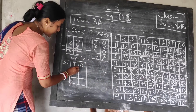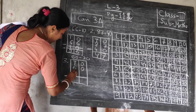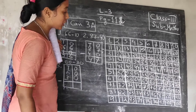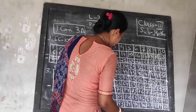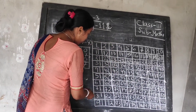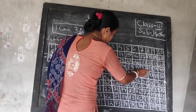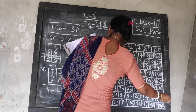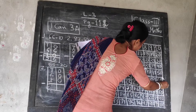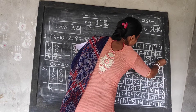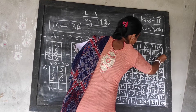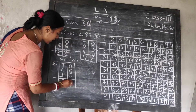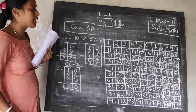Then, 60 minus 30 — write here: 60 minus 30. 30 means you have to move 3 boxes up. Where is your 60? 60 is here. So, 60 minus 30 means 3 boxes up. The answer is 30. Write here 30.